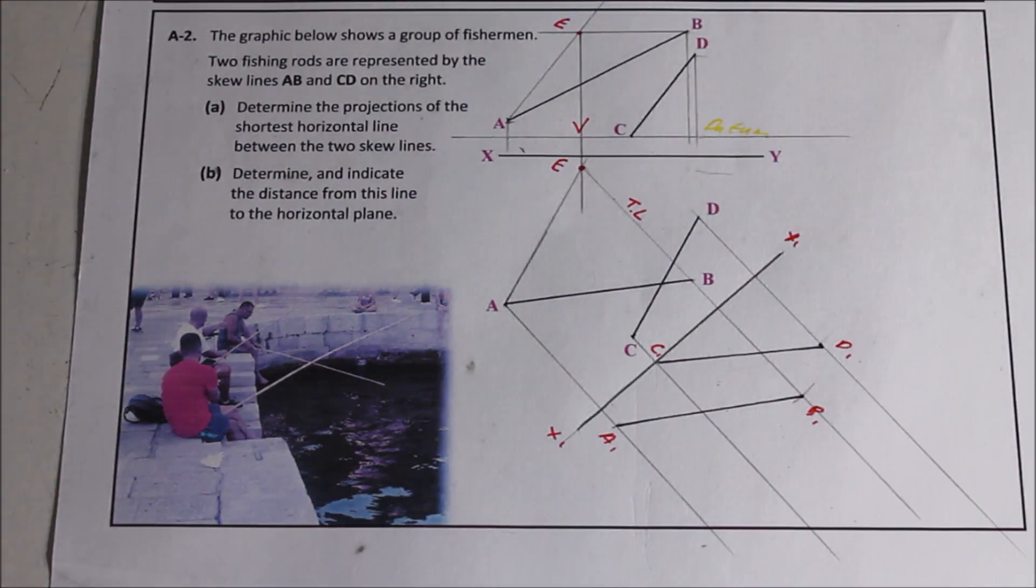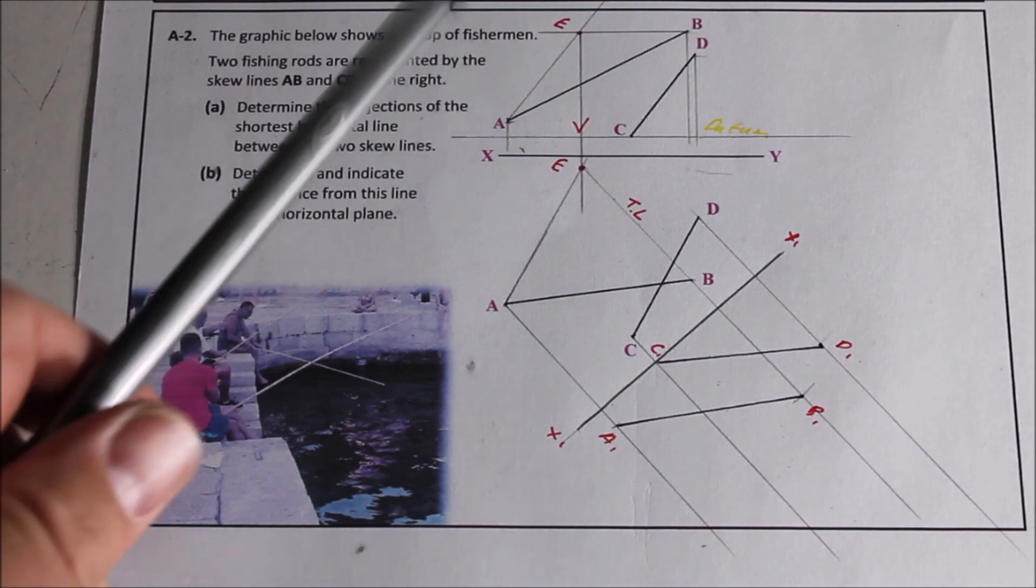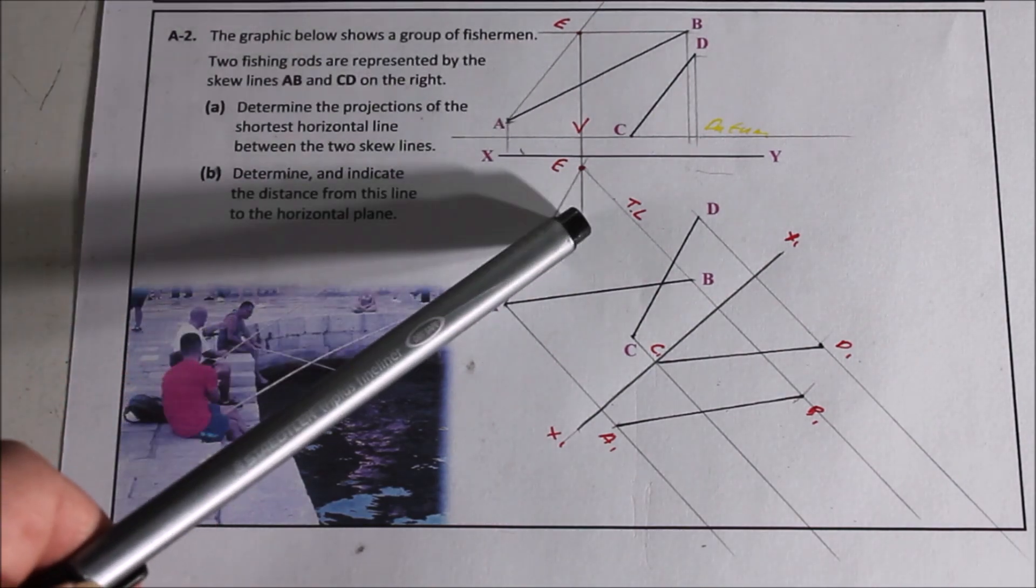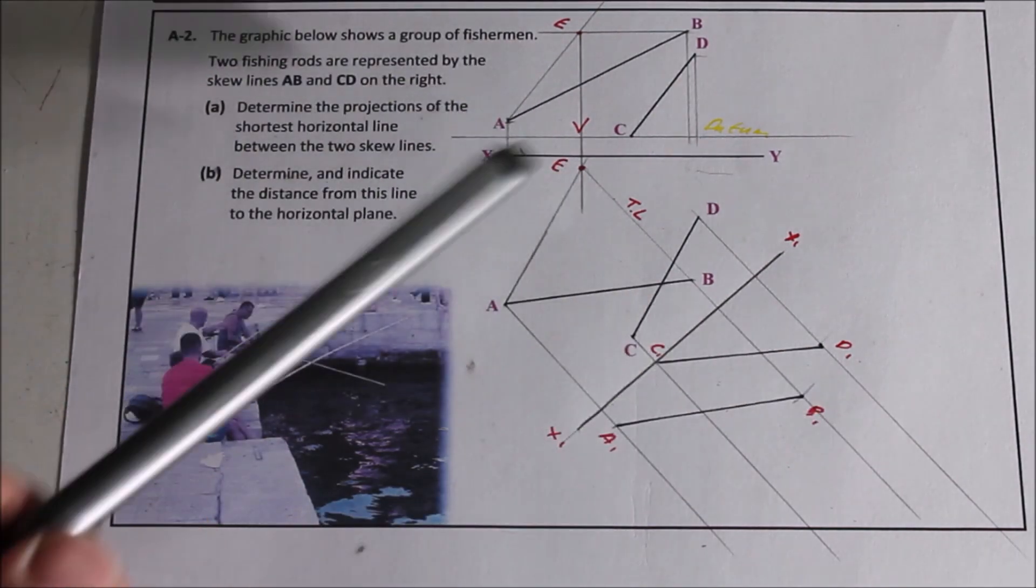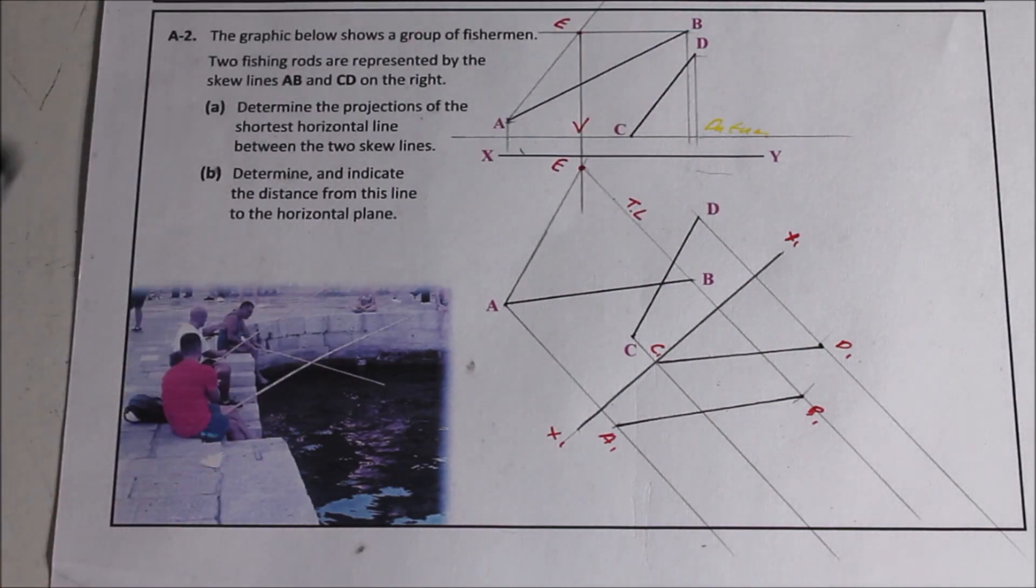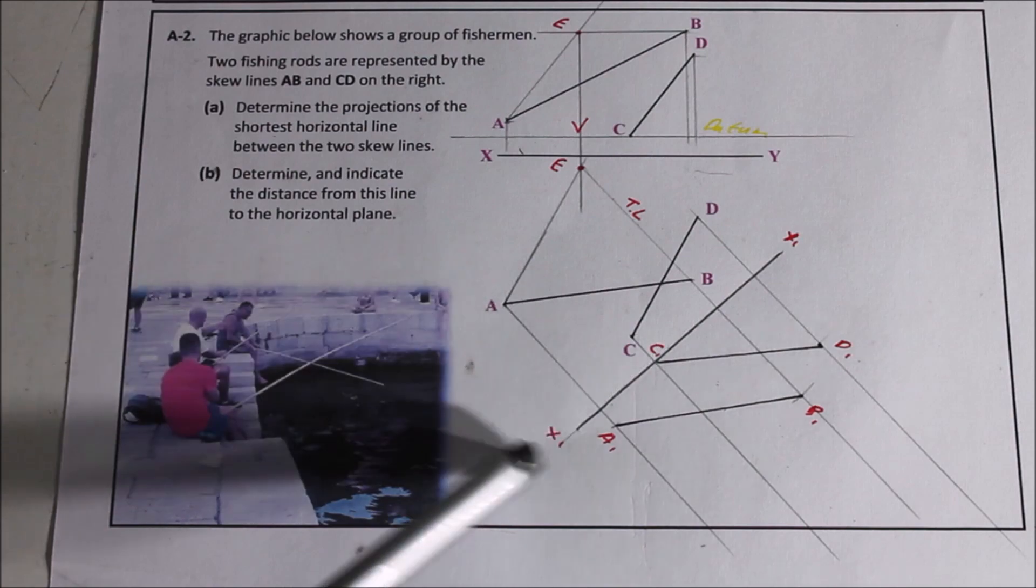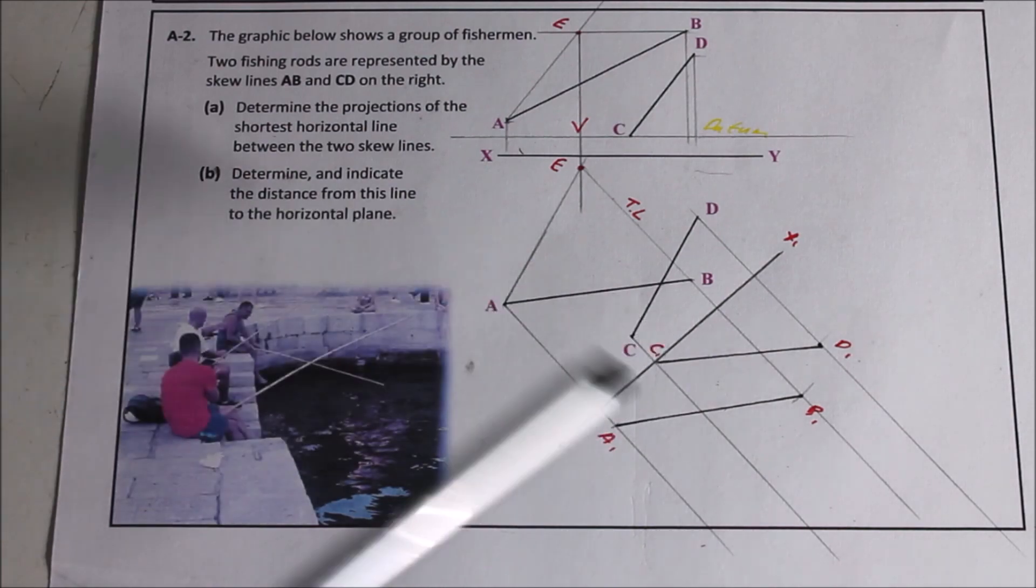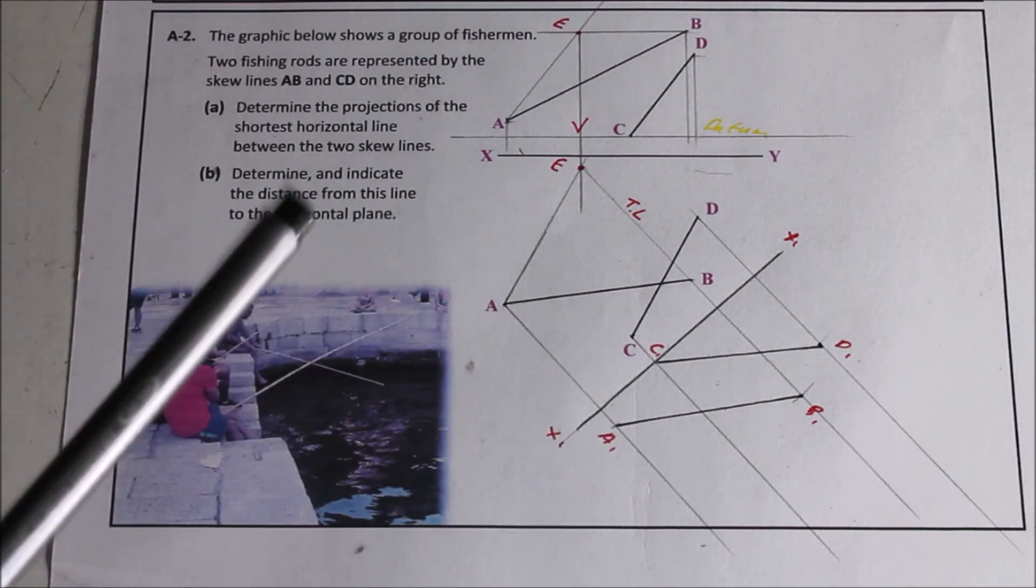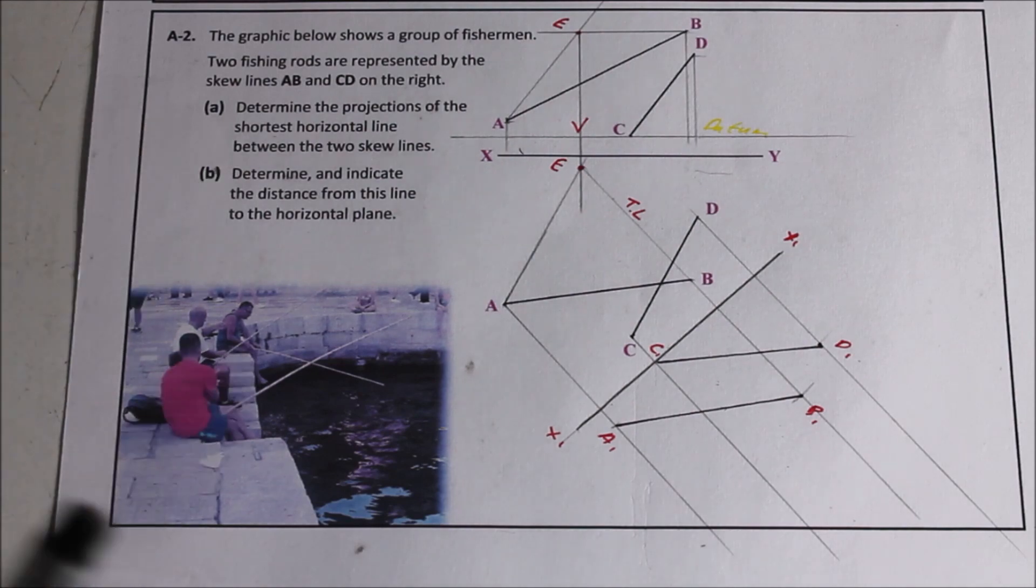When it comes to skew line questions, that setup is the same no matter what they ask you. You're always finding a plane using the two skew lines. You're finding a true length in plan and you're projecting, or whichever view you find the true length. Then you're projecting an auxiliary view. The auxiliary view should give you two lines parallel. Now my heights might be a little bit off, it doesn't look great there. After that then, what they ask you determines how you do your second auxiliary view.